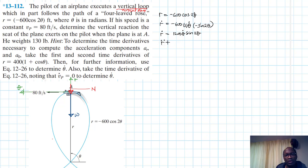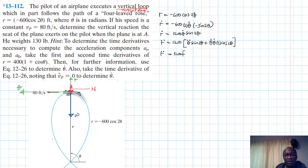Then r_double_dot — we are using the product rule. Derivative of the first while the other is kept constant, plus derivative of the other while the first is kept constant. Therefore r_double_dot is equal to 1200 theta_double_dot sin(2θ) plus 1200 times 2 theta_dot squared cos(2θ).